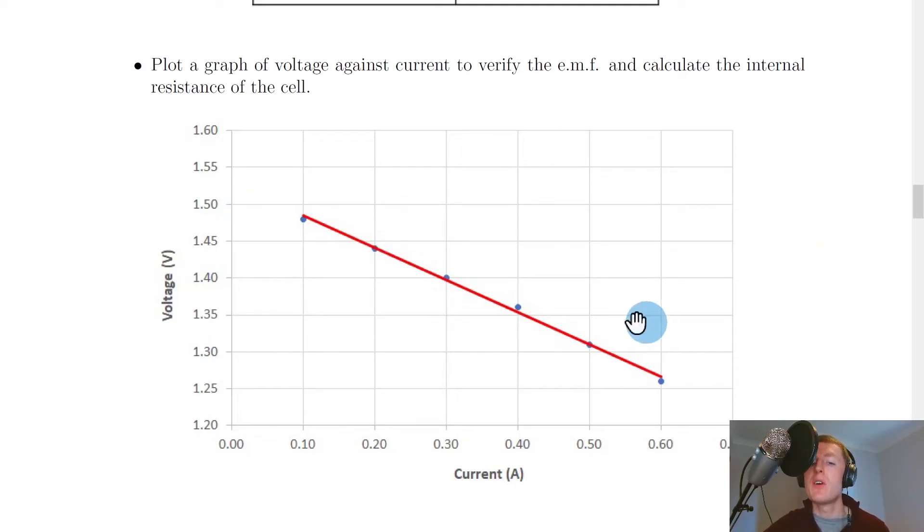Notice the shape of the graph first of all. We've got the terminal potential difference or voltage on the y-axis against current on the x-axis and once you've plotted your points and drawn a line of best fit through those points you'll see we get this negatively sloping line on the graph.